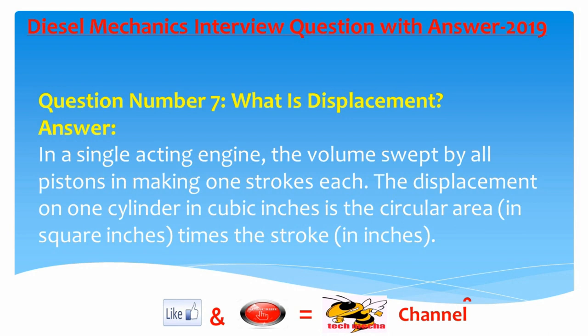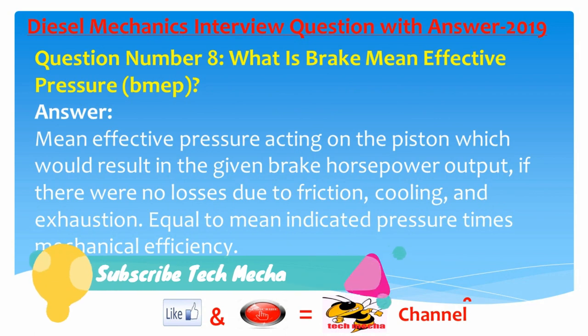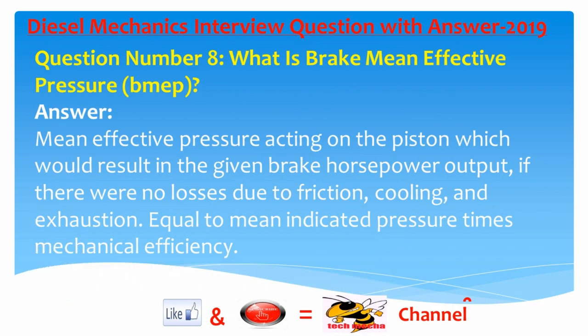Question number seven: What is displacement? Answer: In a single-acting engine, the volume swept by all pistons in making one stroke each. The displacement of one cylinder in cubic inches is the circular area in square inches times the stroke in inches.